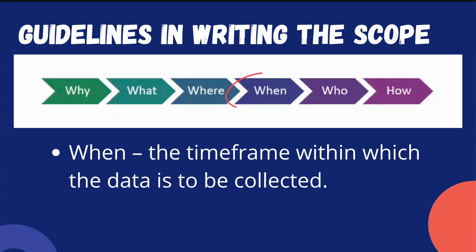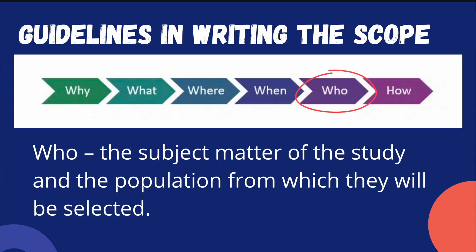Next is WHEN — this talks about the time frame within which the data is to be collected. It is important that you also mention the duration of your study: when will it start and when will it be completed. Next is WHO — it refers to the subject matter of the study and the population from which participants will be selected. The population is the group of people from which you are going to select your participants.